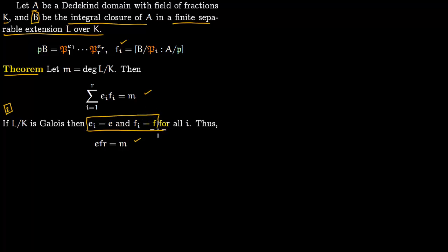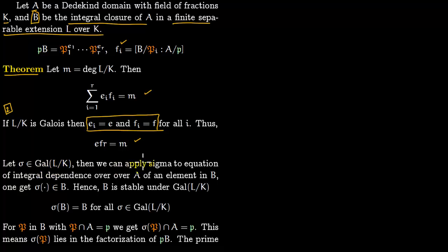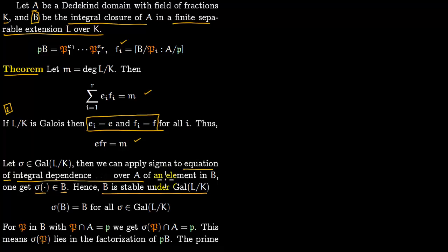To show this we have to use the Galois group. Let σ be an element of the Galois group. You can apply σ to the monic polynomial of integral dependence over A of an element in B. Applying σ gives another element whose integral dependence equation is satisfied, so σ applied to an element of B yields another element integral over A, which therefore lies in B. So B is stable under the Galois action: σ(B) = B for all σ in the Galois group.